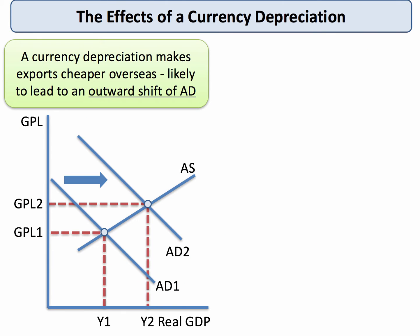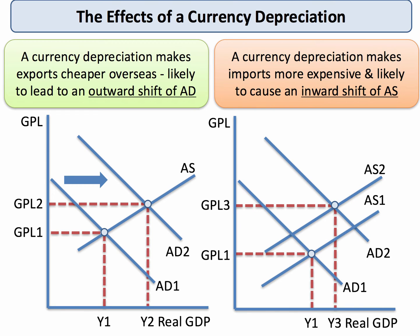So how do we show the effects of a currency depreciation using standard AD/AS diagrams? Well, let's take the first example of the impact on exports. The currency falls in value, it makes exports cheaper overseas, and depending on the elasticity of demand and other factors, we would expect to see aggregate demand shift outwards from AD1 to AD2. So you can imagine how a fall in the exchange rate could be a very useful instrument of monetary policy designed to lift an economy out of a recession.